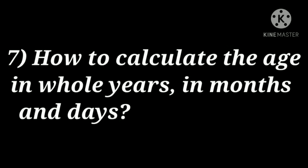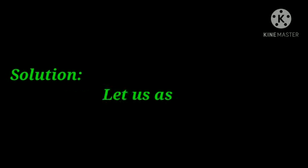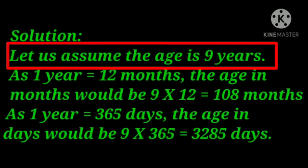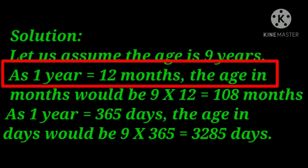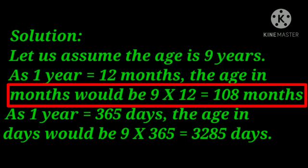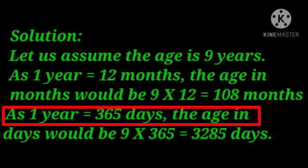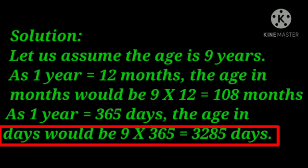How to calculate age in whole years, in months, and in days? Let us assume the age is 9 years. Since 1 year is 12 months, the age in months would be 9 multiplied by 12, which equals 108 months. Since 1 year is equal to 365 days, the age in days would be 9 multiplied by 365, which equals 3285 days.